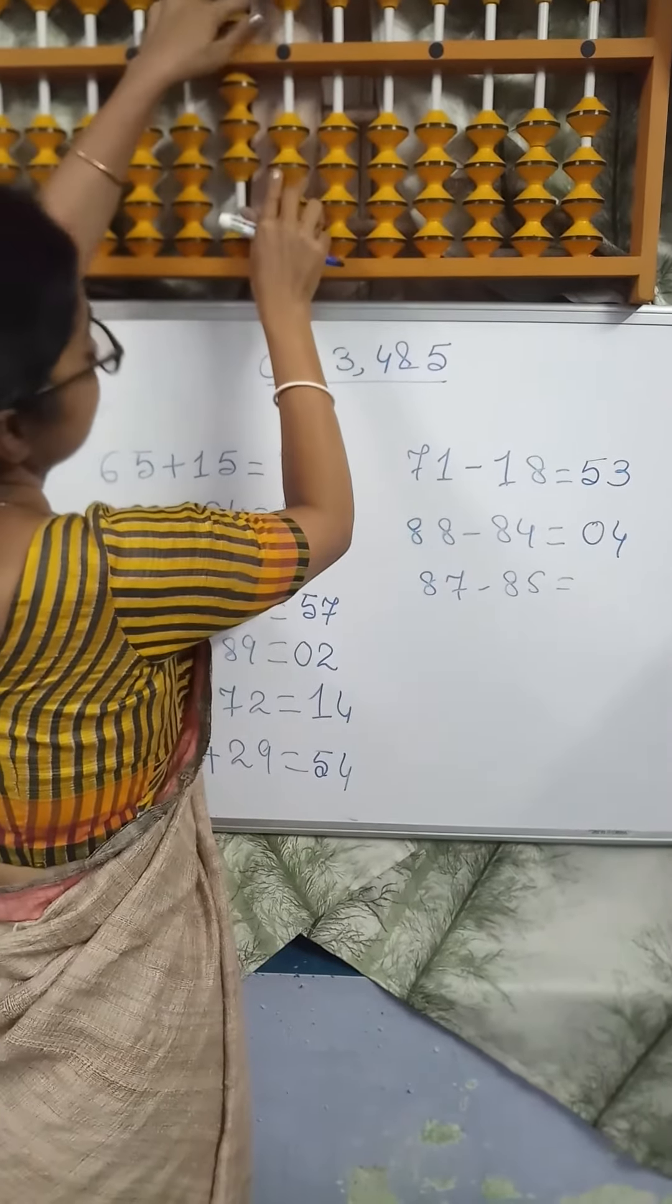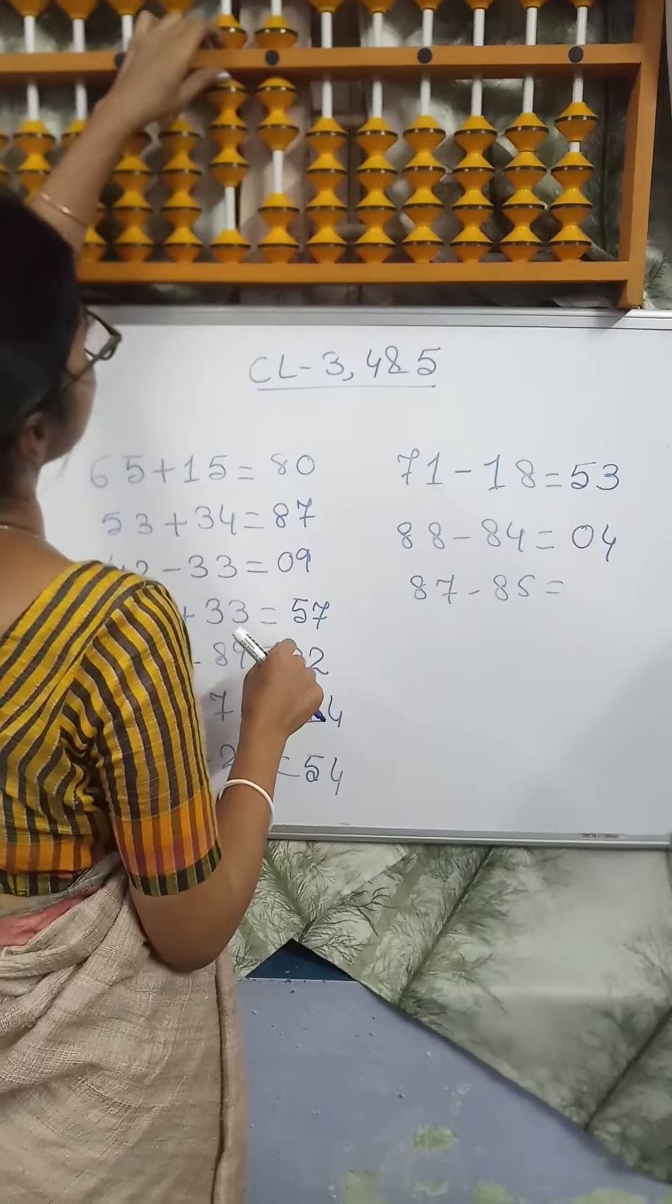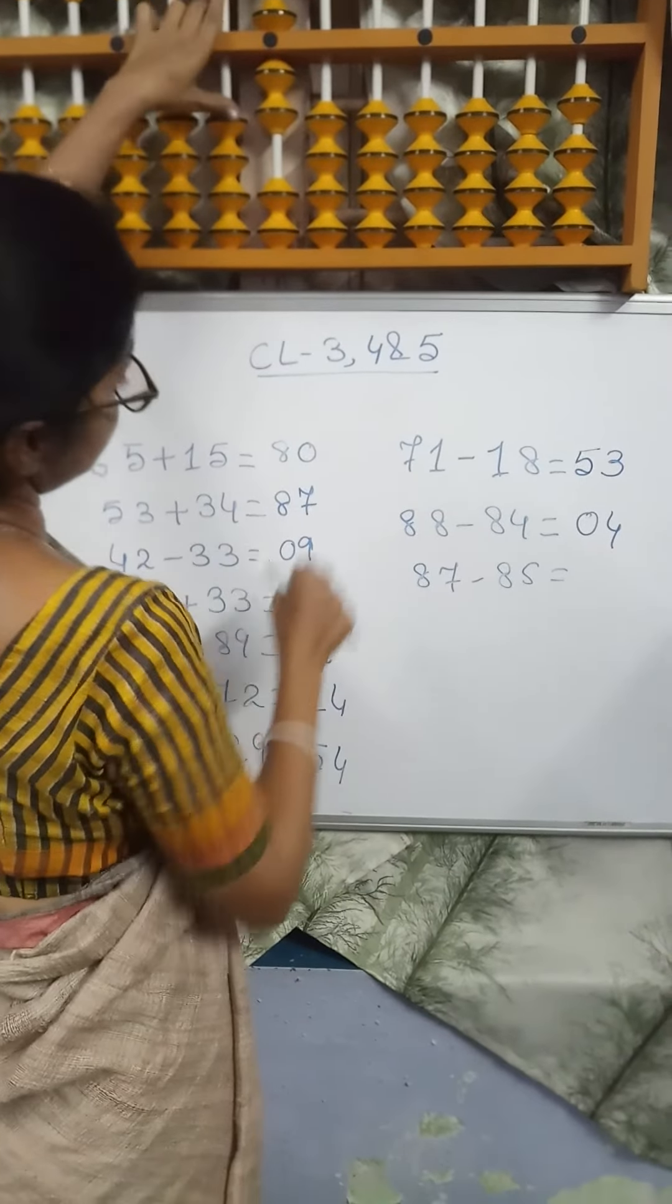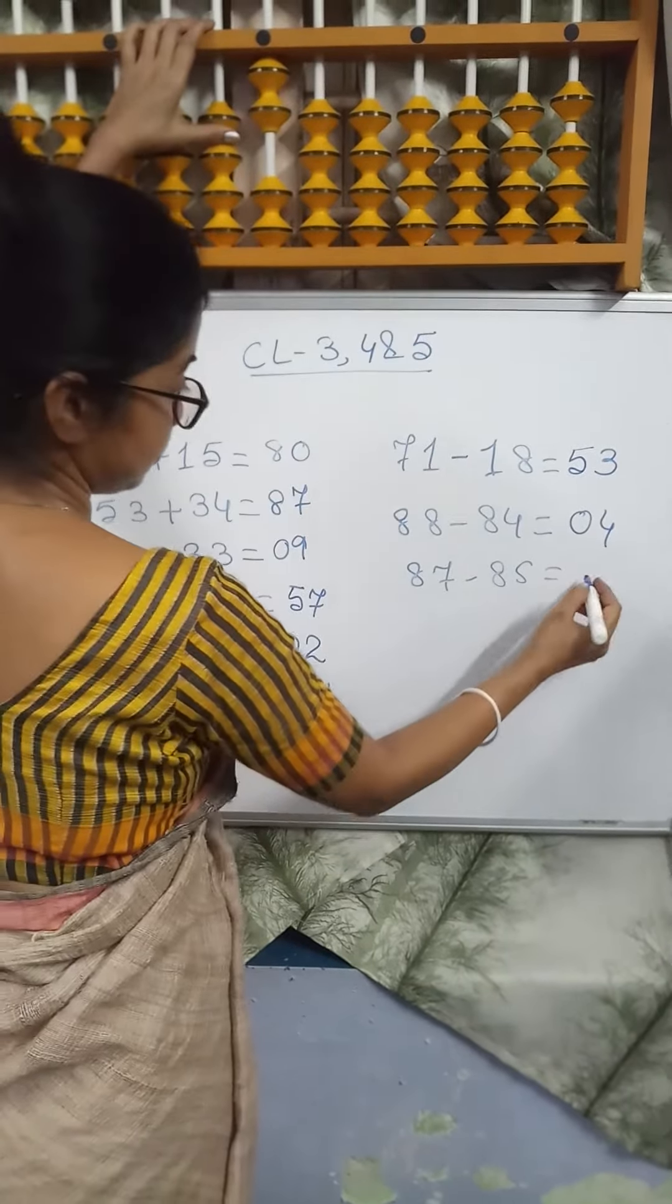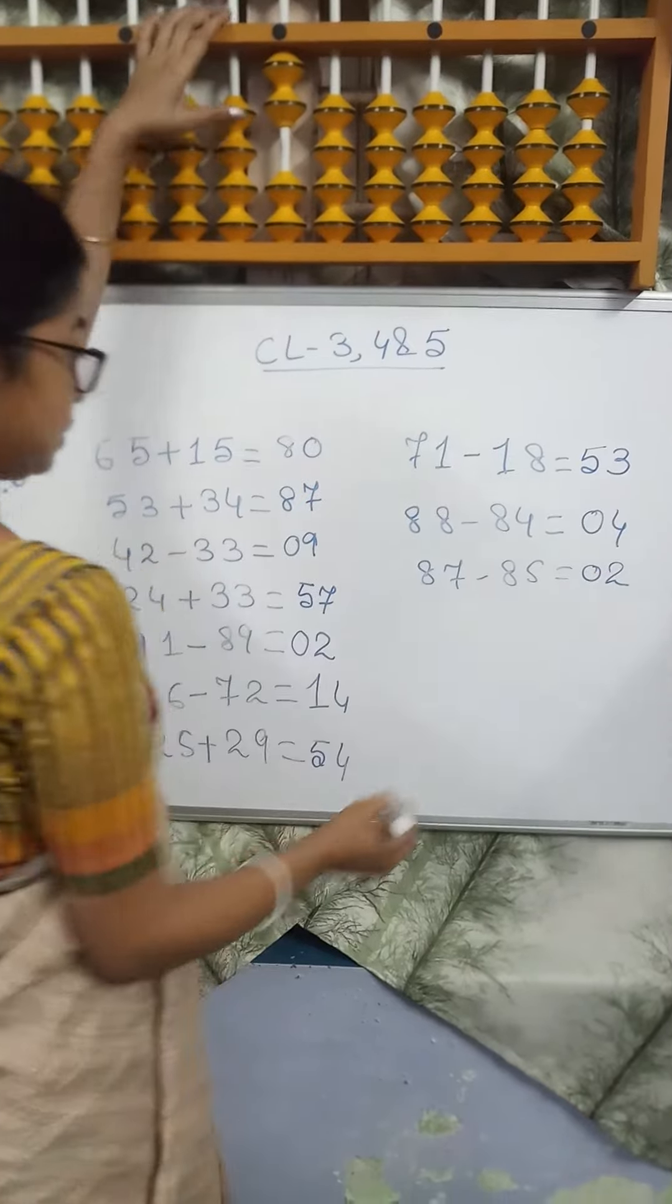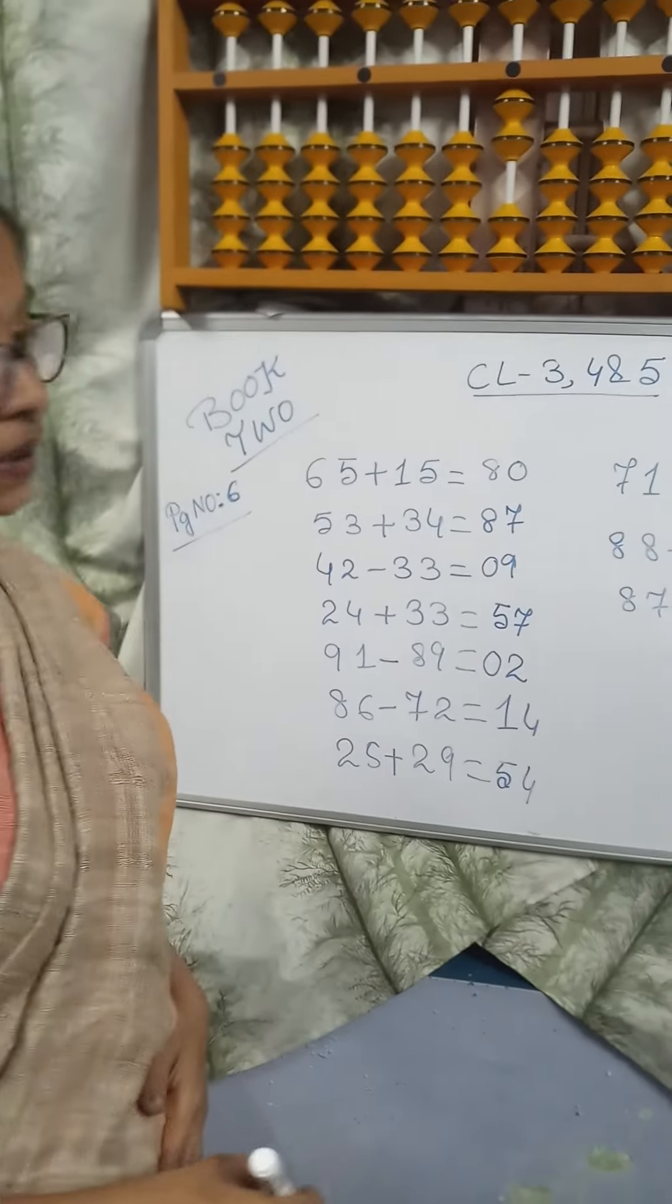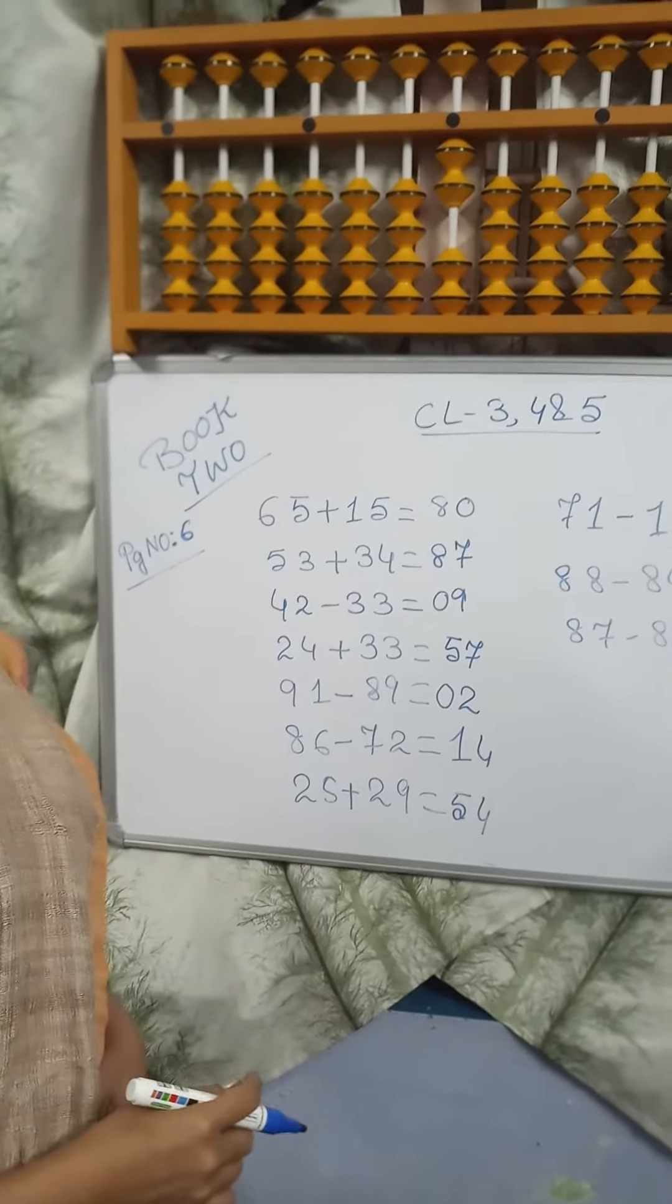Next sum. 87 minus 85. Minus 80, minus 5 direct. Try to do page number 6, first row of book 2.